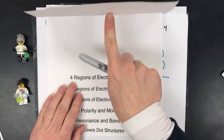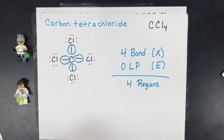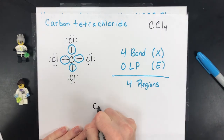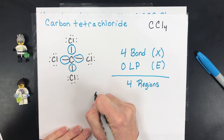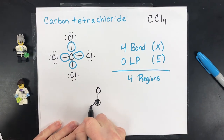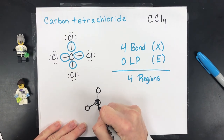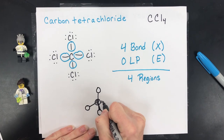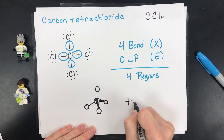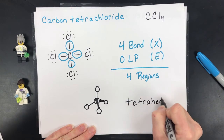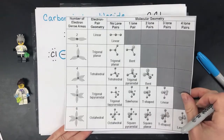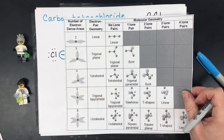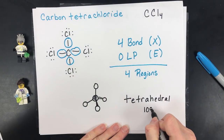Using the chart, four regions with no lone pairs gives a tetrahedral shape. When drawing it correctly, you show the center carbon bonding to a chlorine up and out in the same plane, a wedge bond coming toward you, and a dashed line going back. The shape is tetrahedral with a bond angle of approximately 109.5 degrees.